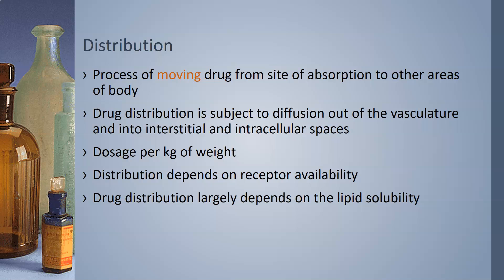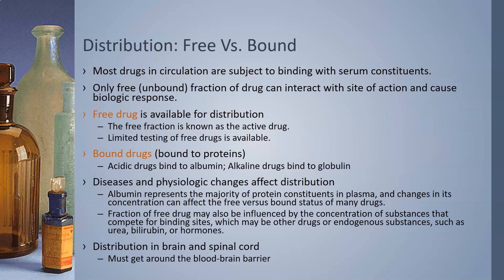Distribution can also depend on receptor availability if a receptor is necessary for the drug to have an effect or to be absorbed. Drug distribution largely depends on the lipid solubility of the drug — if it is lipid soluble, it often has to be transported on proteins in circulation. So having enough proteins to transport them is an important factor in distribution.